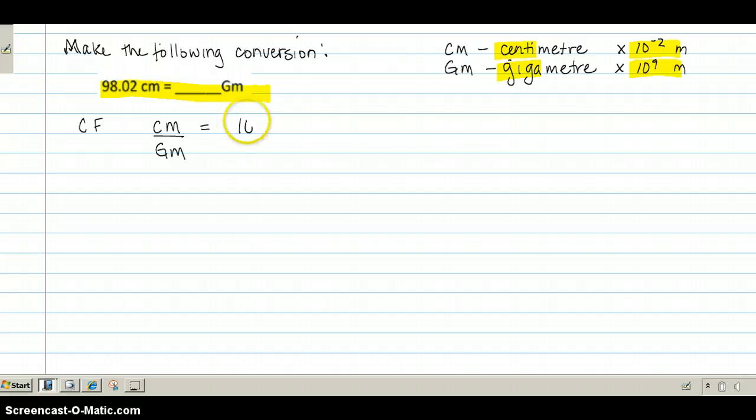So I know that a cm is 10 to the minus 2 m, or 0.01, and a gigameter is 10 to the ninth meters.